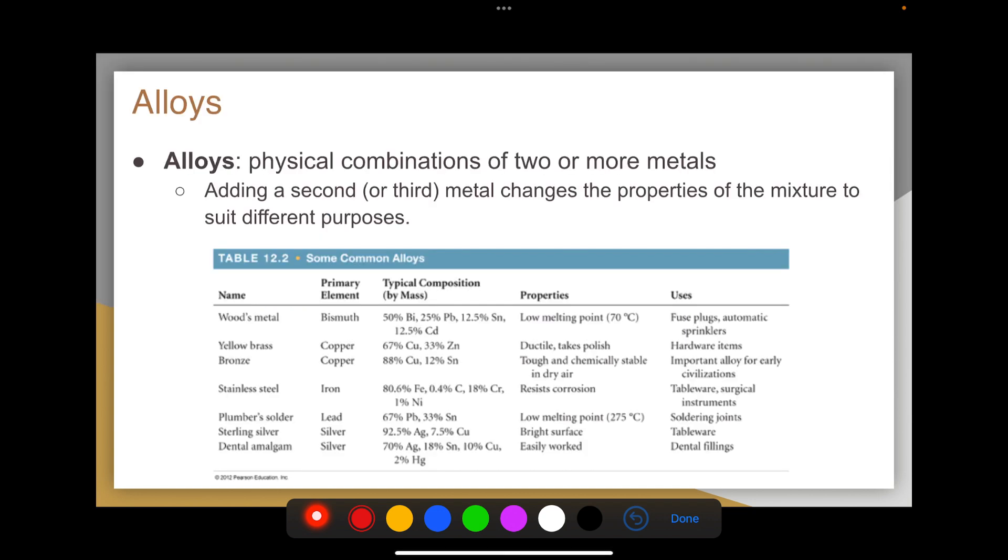So an alloy is a physical combination of two or more metals. In fact, some alloys can be described as a solution of one metal dissolved in another. So it's a physical mixture. These atoms are not chemically combined.